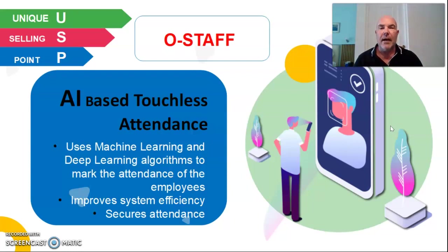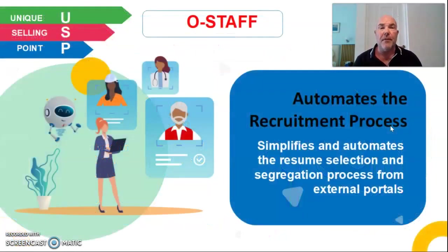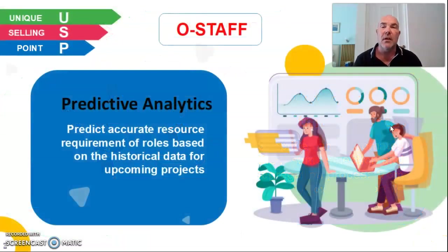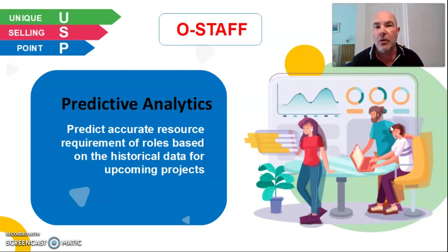Using machine learning and deep learning algorithms to mark attendance, we pick up the IP address and location, and it gets logged from where the employee is. This improves system efficiency and secure attendance because you know they are actually there logging in. We also automate the recruiting process — it simplifies and automates the resume selection and segregation process from external portals. You put the information in once, it segregates it and puts it into the right areas so you know what that person is capable of doing. It also has predictive analytics, accurately determining resourcing requirements for role bases from historic data for upcoming projects, telling you exactly what staff members are capable of doing both now and for future projects.